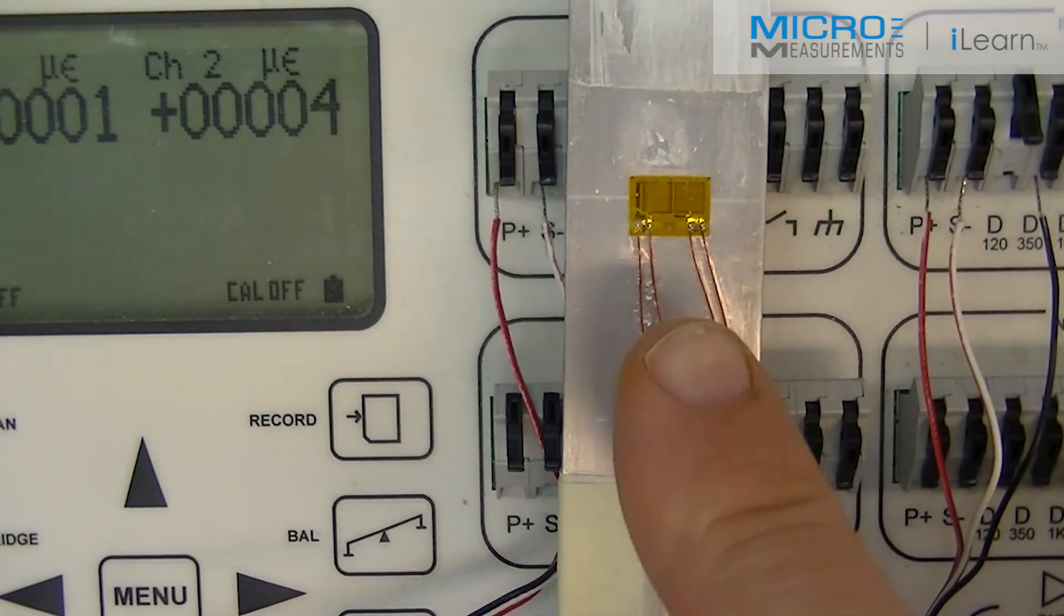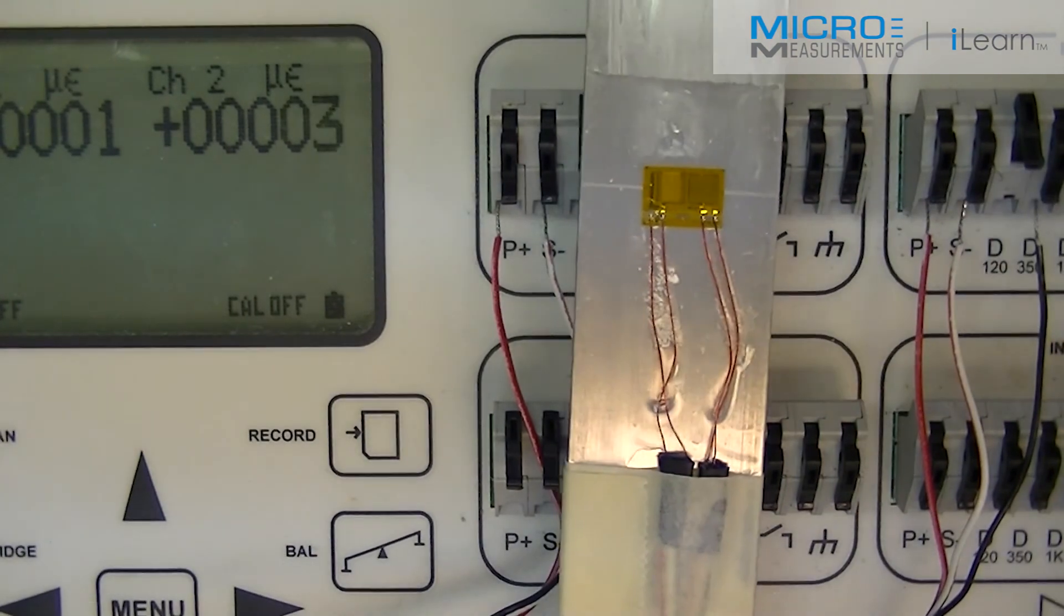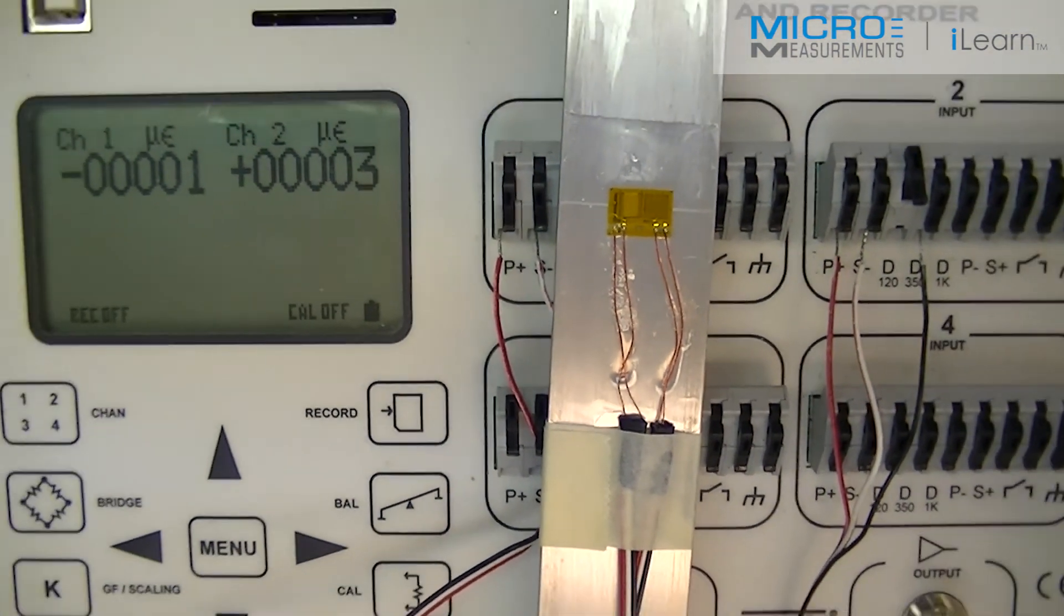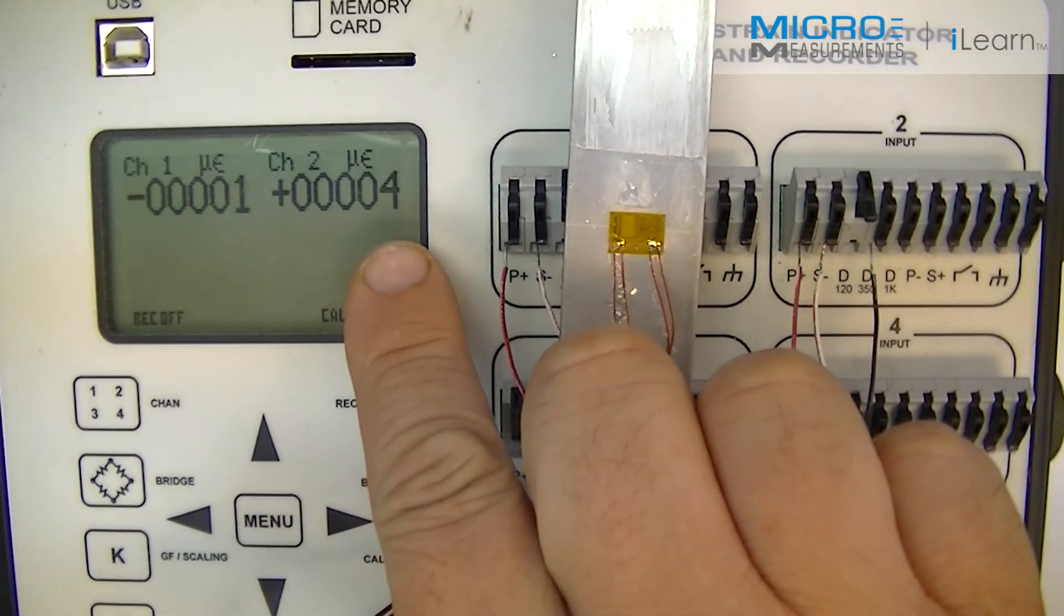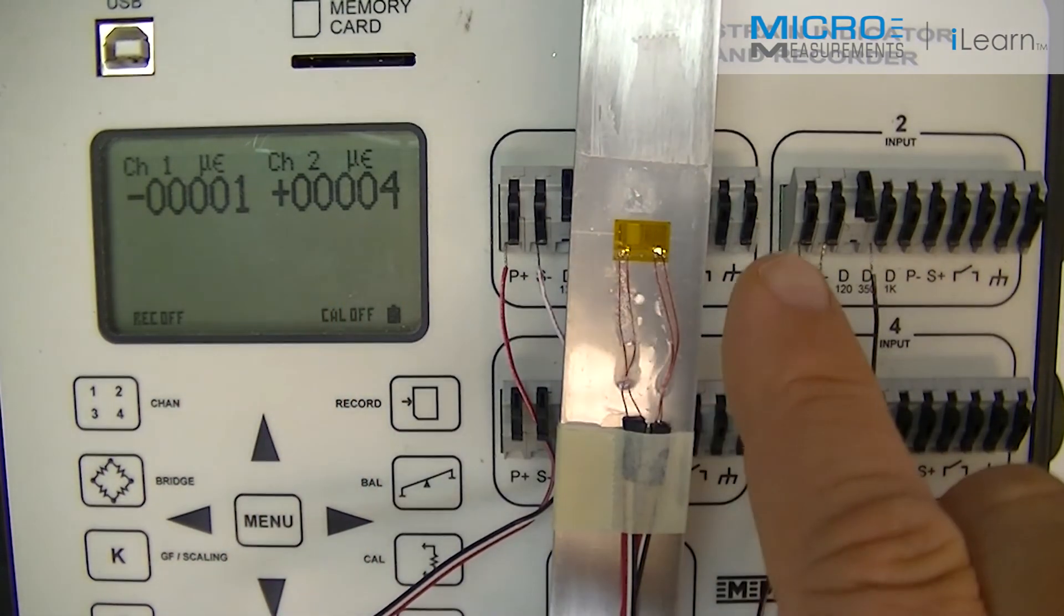So the left grid, grid 1, is connected to channel 1 as indicated on the display here. And that's the Poisson grid. This grid is connected to channel 2. This is the linear grid.